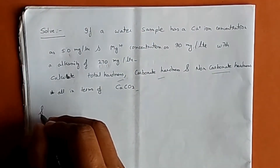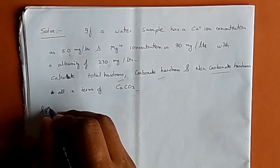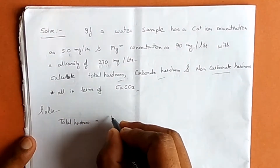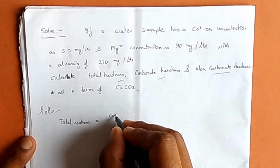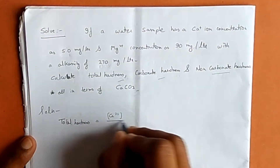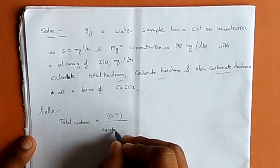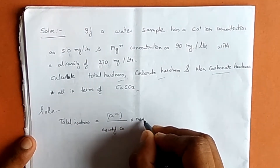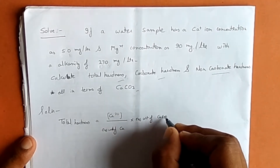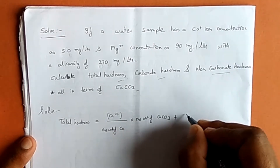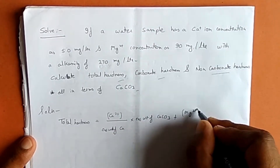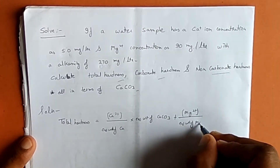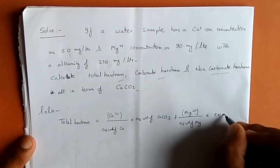For the solution, total hardness is given by the concentration of calcium ions divided by the equivalent weight of calcium, multiplied by the equivalent weight of calcium carbonate, plus the concentration of magnesium ions divided by the equivalent weight of magnesium, multiplied by the equivalent weight of calcium carbonate.